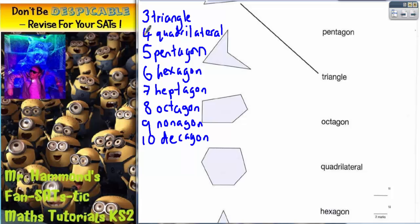So, a triangle's got three sides, a quadrilateral's got four sides, a pentagon's got five sides, a hexagon's got six sides, heptagon is seven sides, octagon is eight sides, nonagon is nine sides, and decagon is ten sides. These are the ones that you need to know for your SATs.